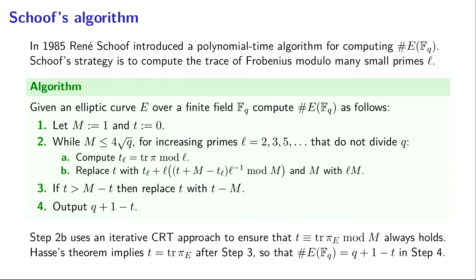That seems like a very nice, simple algorithm. Of course, all of the work is in step 2A. How are we going to compute the trace of Frobenius mod L? Before I jump into that, any questions on the basic idea of the algorithm?